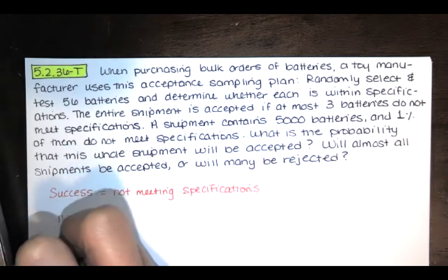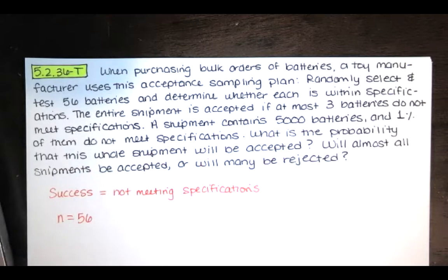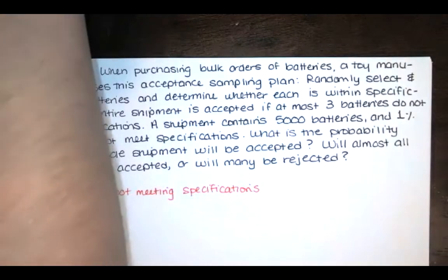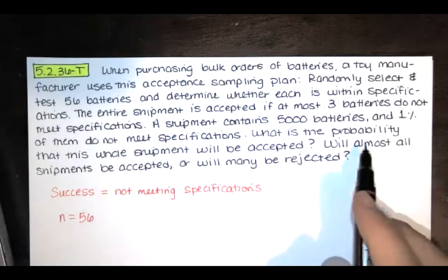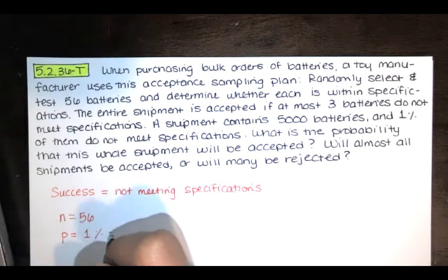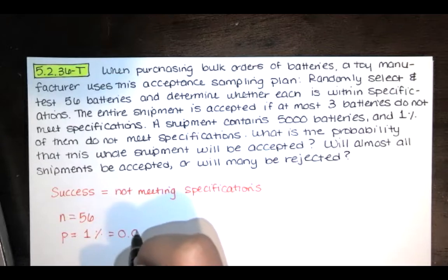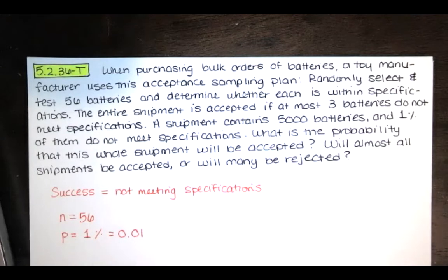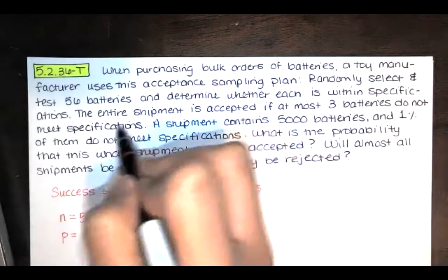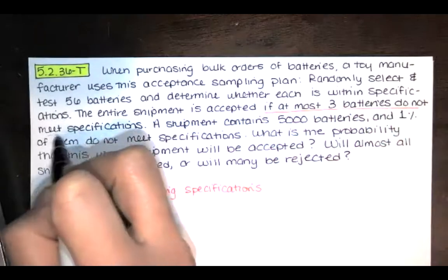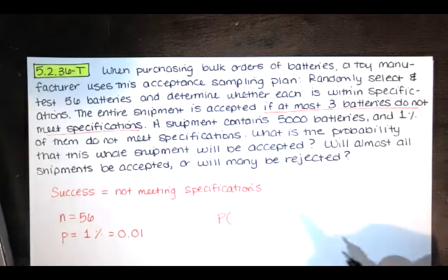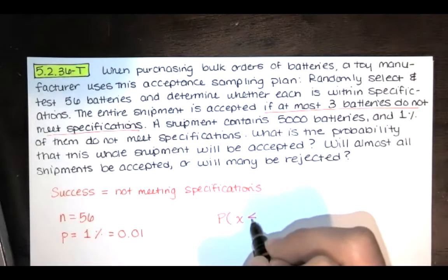The number of trials is 56 because we're looking at 56 batteries. We're told that the shipment contains 5,000 batteries and 1% do not meet specifications. So the probability of success in one trial is 1%, but we want that in decimal form, so we'll have 0.01. That's the probability of a particular battery not meeting specifications. The shipment will be accepted if at most three batteries do not meet specifications, so we're looking for the probability that x is less than or equal to 3.